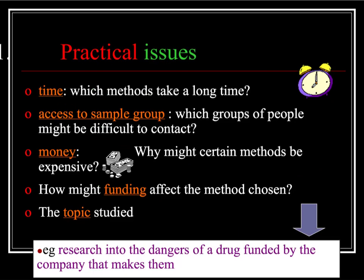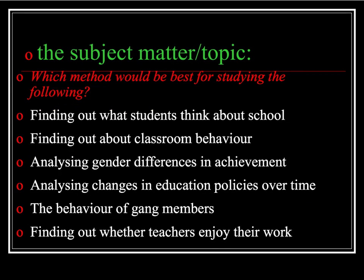When it comes to funding, consider the example of the dangers of drugs being funded by the companies that make them. Many health studies into the damage that cigarette smoking did were mainly conducted by the cigarette companies themselves in the 1930s and 40s. Certain research methods are better suited to certain topics - for example, unstructured interviews would be very good for researching sensitive things like rape, domestic violence, and bullying.